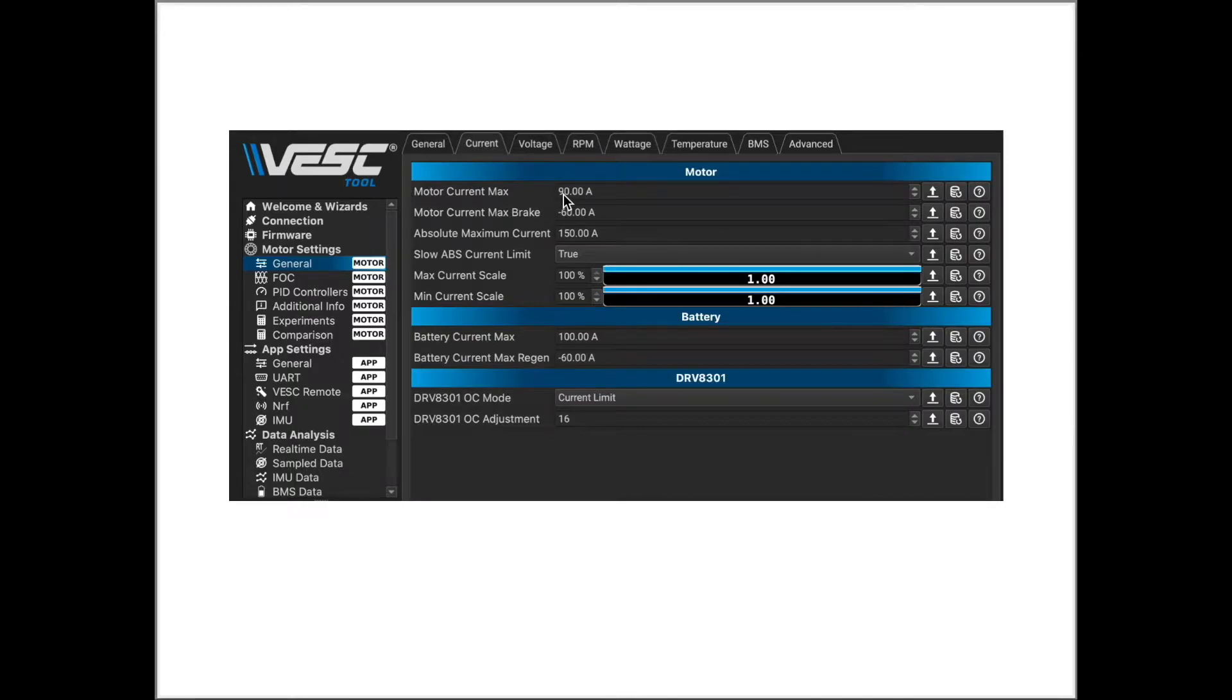I've set the VESC to a maximum motor current value of 60, 90, or 120 motor amps and I did a full throttle run for each of the motor current limits. The battery current limit was set to 100 amps.